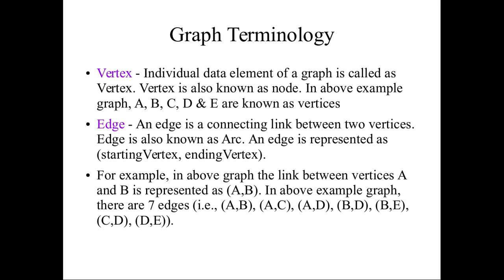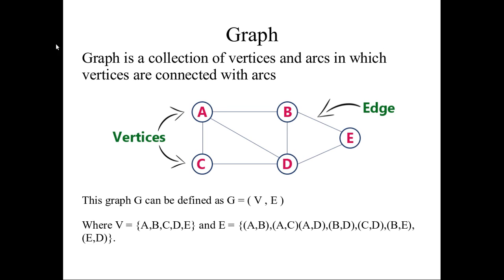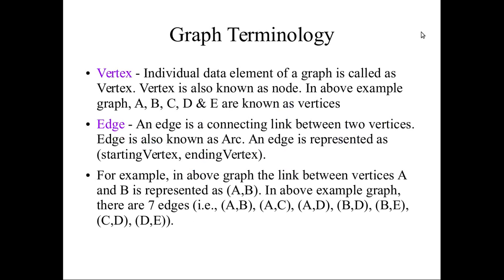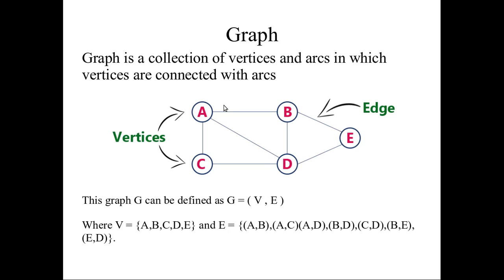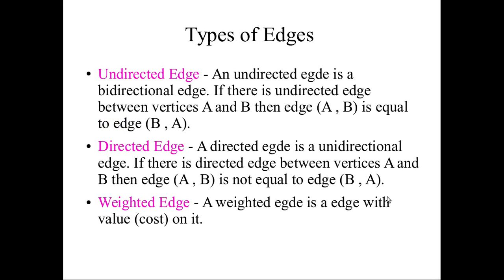If we look at the starting and ending, we will see the edge. This is the vertex. Under the types — the directed graph or the weighted graph. If we look at the vertex, this is the undirected graph.